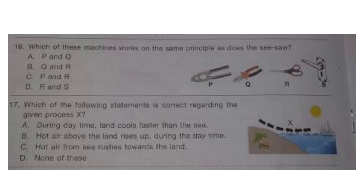Question 17: Which of the following statements is correct regarding the given process X? A: During daytime land cools faster than the sea; B: Hot air above the land rises up during the daytime; C: Hot air from sea rushes towards the land. During the day, the land surface heats up faster than the water surface, the air above land is warmer than the air above the ocean, and the hot air rises up so air from the sea rushes towards the land.